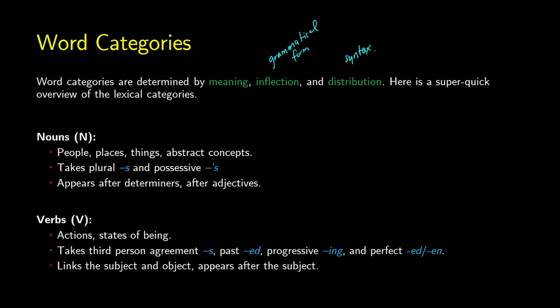Nouns are people, places, things, or abstract concepts — like 'dog' and 'happiness'. They can take the plural 's' or possessive 's': 'a dog's thing', 'happiness is misfortune'. They appear after determiners: 'the [noun]', 'a [noun]', 'many [noun]', 'few [noun]', and so on.